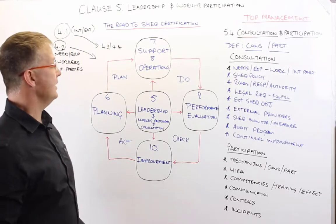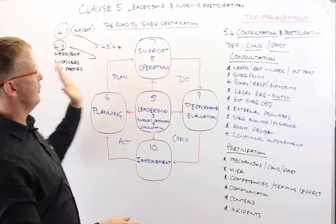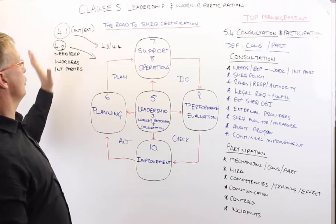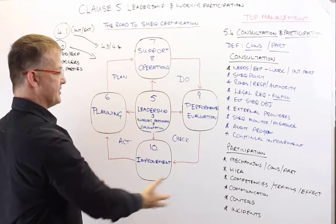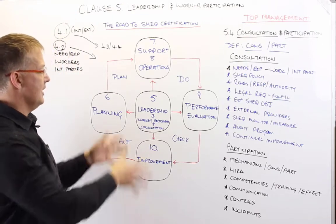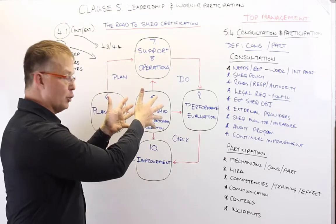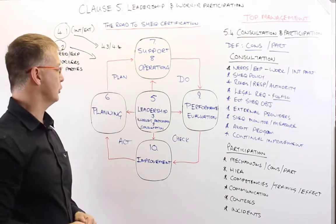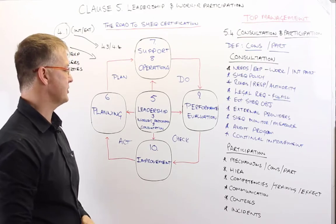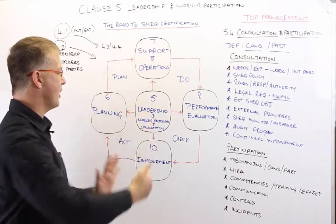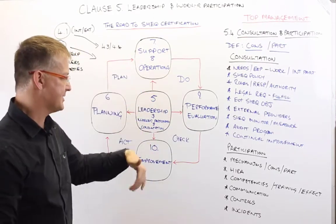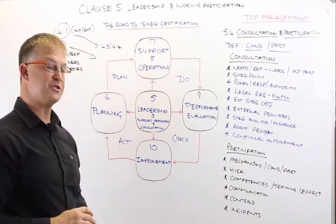Let's quickly recap and have a look at where we've come from and where we're going to. We've had a look at Clause 4 and how it helps us to determine the context of the organization. In this particular clause, we're focusing on Clause 5, which is leadership and worker participation and consultation, and how that drives, informs, and directs all of the other clauses.